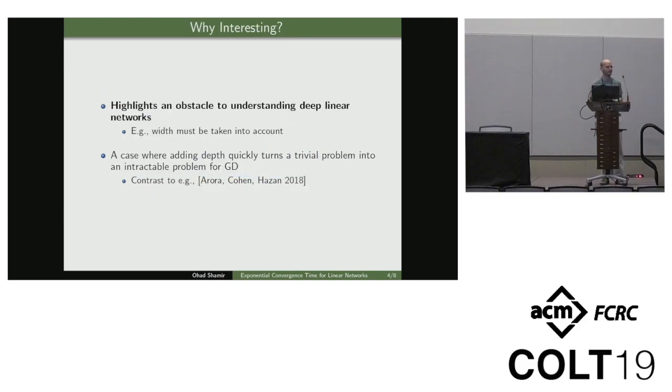So why is this interesting? Of course, no one actually uses one-dimensional linear neural networks, but I think it's interesting for a couple of reasons. So first of all, it highlights a potential obstacle to trying to get a positive result for deep linear networks. At the very least, such analysis would need to circumvent this result somehow. So for example, most existing analyses don't really depend on the width of the network. And if you don't depend on the width, then any kind of positive result would also have to apply to one-dimensional networks. And then you run into this exponential dependency on the depth problem.